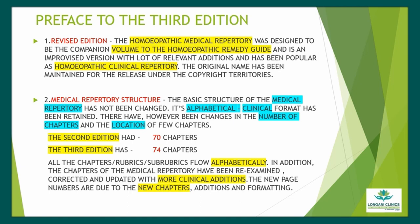The basic structure of the medical repertory has not been changed. Its alphabetical clinical format has been retained. However, there have been changes in the number of chapters and the location of a few chapters. The second edition had 70 chapters; the third edition has 74 chapters. All the chapters, rubrics, and sub-rubrics flow alphabetically. The chapters have been re-examined, corrected, and updated with more clinical additions. The new page numbers are due to the new chapters, additions, and formatting.